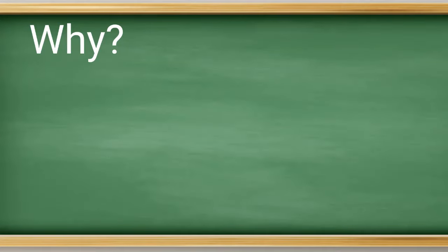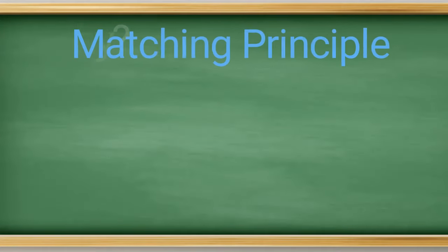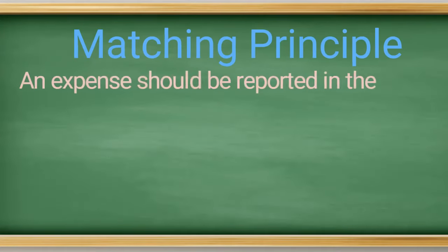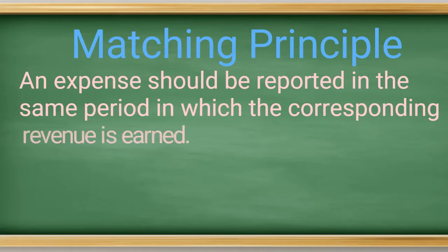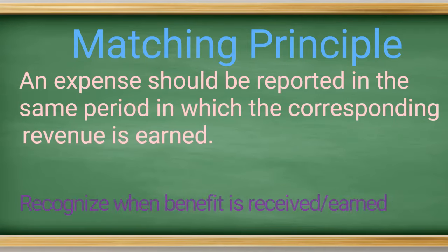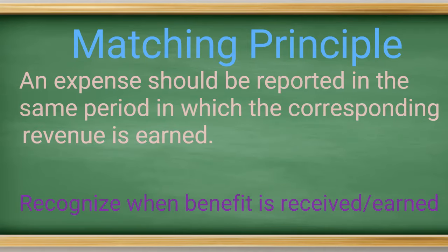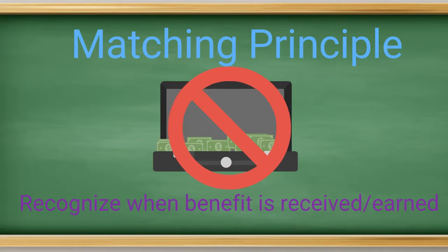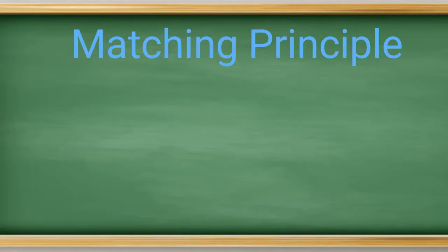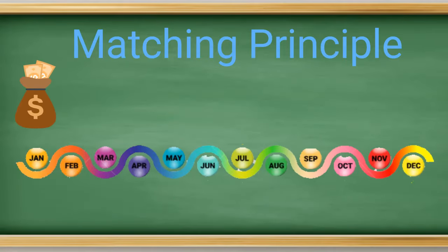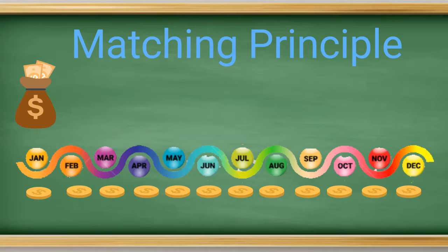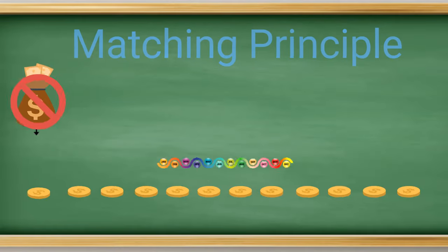So why do we make these adjusting entries? These adjusting entries are made due to the matching principle in accrual accounting — that means the expense or revenue should match when the benefit is received, not necessarily when the cash is paid. In our first example of an annual insurance premium, the insurance covers a period of one year and should be allocated across that year. It would be incorrect to recognize all the expense in the month paid if its benefit would be realized over the next year.